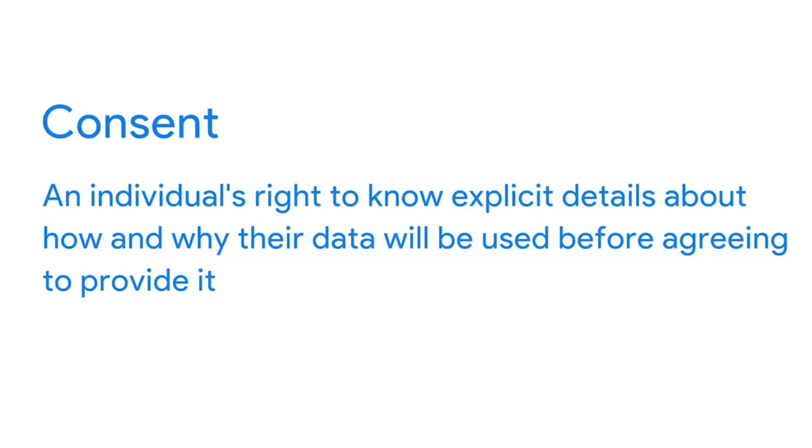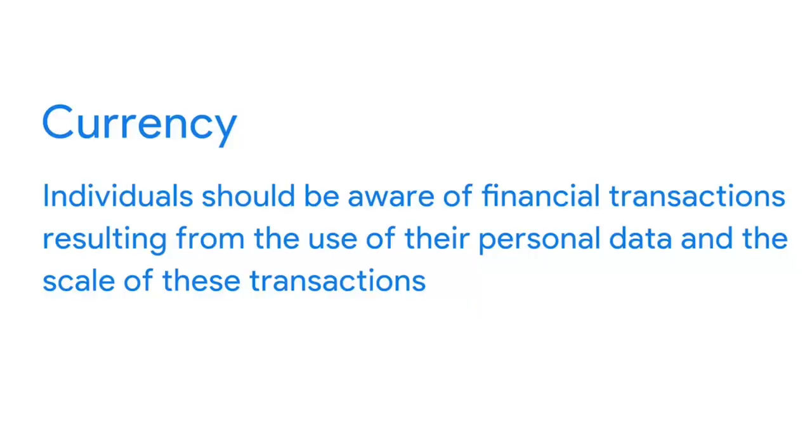Now let's talk about another aspect of data ethics: consent. This is an individual's right to know explicit details about how and why their data will be used before agreeing to provide it. They should know answers to questions like: why is the data being collected, how will it be used, and how long will it be stored? The best way to give consent is probably a conversation between the person providing the data and the person requesting it. But with so much activity happening online these days, consent usually just looks like a terms and conditions checkbox with links to more details. Consent is important because it prevents all populations from being unfairly targeted, which is a very big deal for marginalized groups who are often disproportionately misrepresented by biased data. Individuals should also be aware of financial transactions resulting from the use of their personal data.